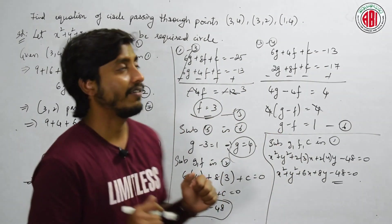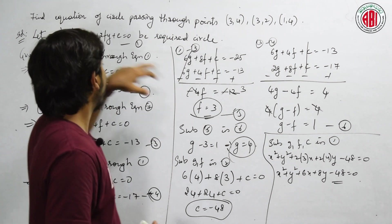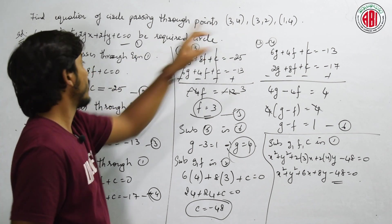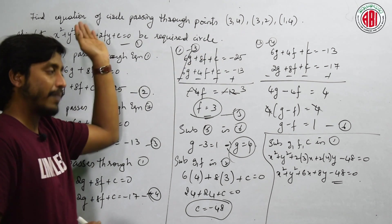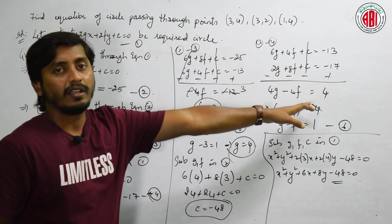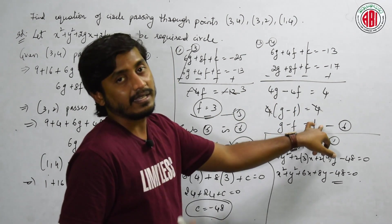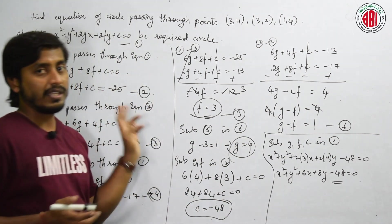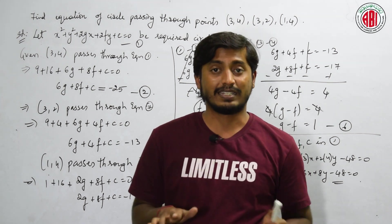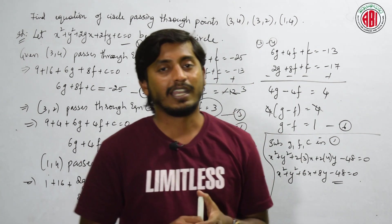Once again, let me summarize. He asked us to find the equation of a circle passing through those 3 points. We took the standard equation as the required circle, named it equation 1. Substituting the first point gives equation 2, second point gives equation 3, third point gives equation 4. Subtracting 2 minus 3 and 3 minus 4 gives two equations in terms of g and f, which we call equations 5 and 6. Solving those two gives the values of g and f. Substituting in equation 2 gives c. Substituting all g, f, c in equation 1 gives the final equation of the circle.